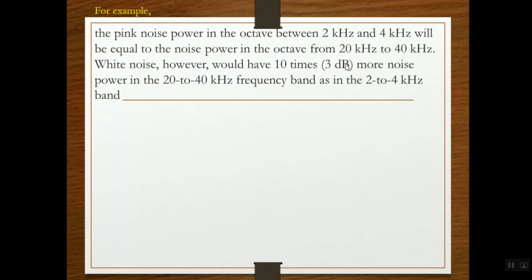White noise, however, would have 10 times, that is 3 dB, more noise power in the 20 to 40 kHz frequency band as in the 2 to 4 kHz band.